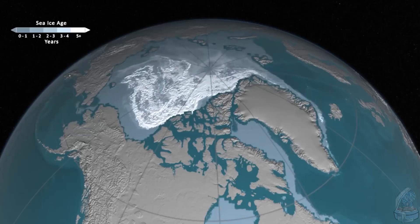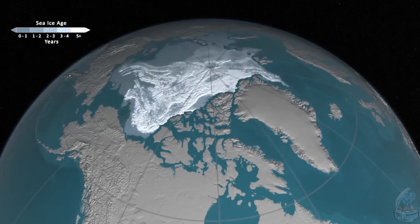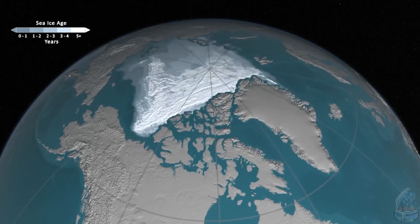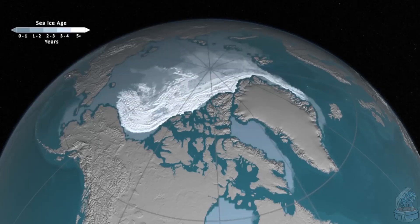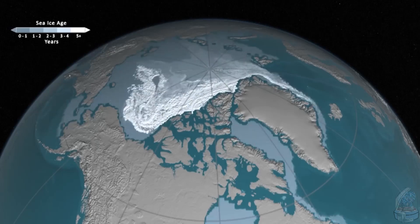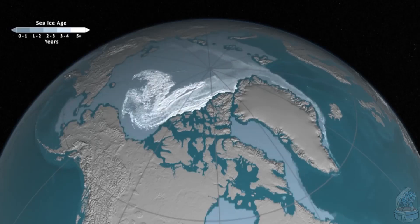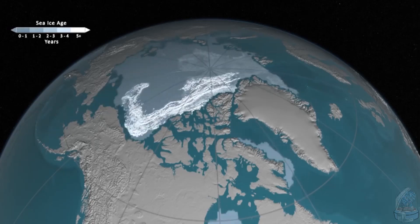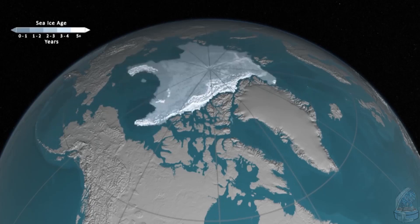You see that the older ice eventually moves out of the Arctic and into the North Atlantic, where it melts. But the ice gets replenished within the Arctic because some of the ice survives each summer and grows older, particularly in a region north of Alaska called the Beaufort Sea, where the ice spins around in a clockwise direction called the Beaufort Gyre.